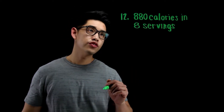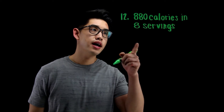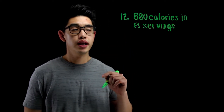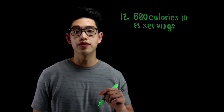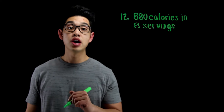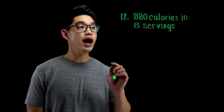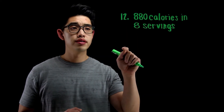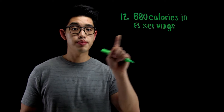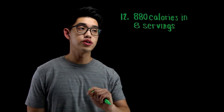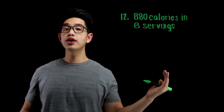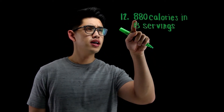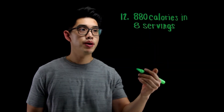For number 12, it says that you have 880 calories in 8 servings. I want to find the unit rate — how many calories there are not in 8 servings, but in 1 serving. So all you have to do is divide. We're going to do 880 divided by 8.